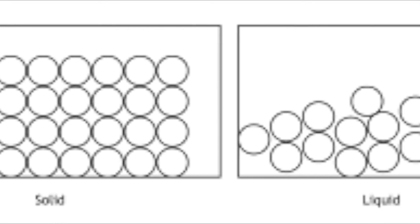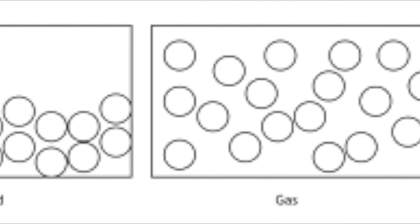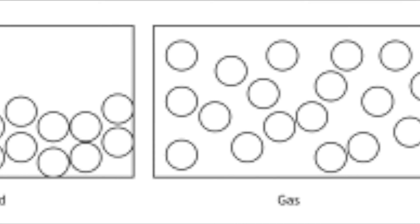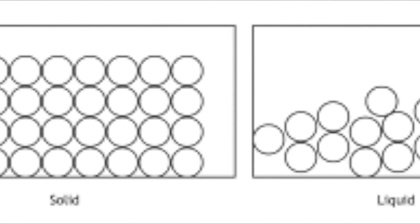When a solid turns to a liquid it's called melting. When a liquid turns to a gas it's called boiling. When a gas turns back into a liquid it's called condensing. When a liquid turns back into a solid it's called freezing.